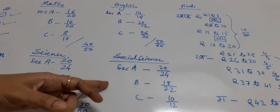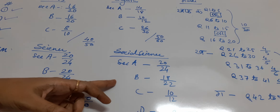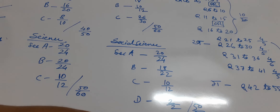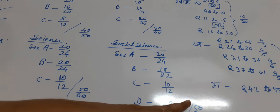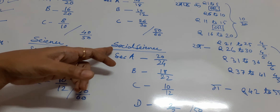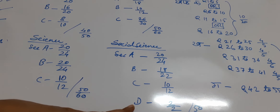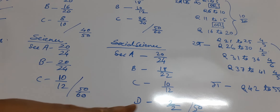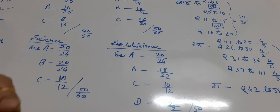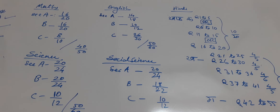In social science, total 60 questions are there, out of which 50 you need to solve. There are 4 sections. In the last section, section D, map questions will be there and both map questions you need to solve.